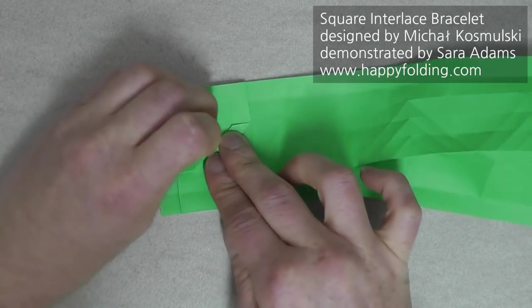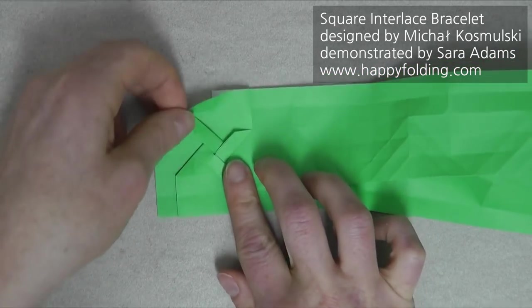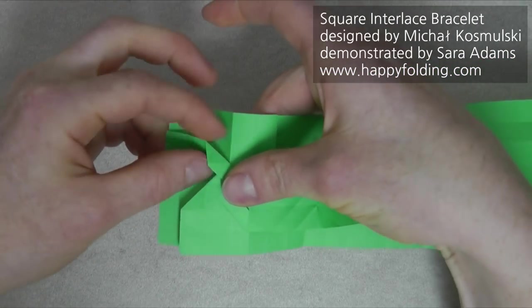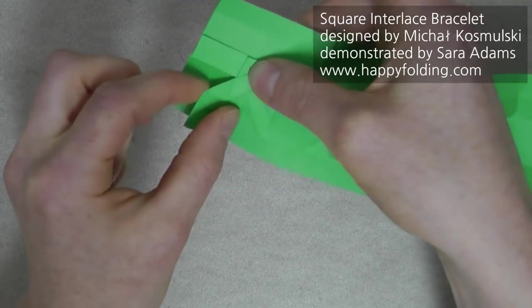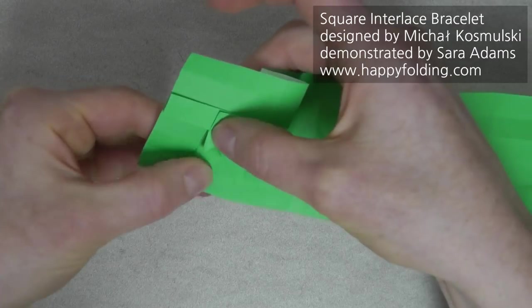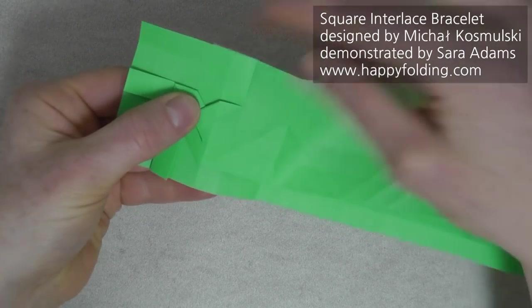Now, for the square interlace pattern, we're going to make an inside reverse fold along here. Using the grid line, just open the paper and push it in and flatten it down. Same here, and right there.